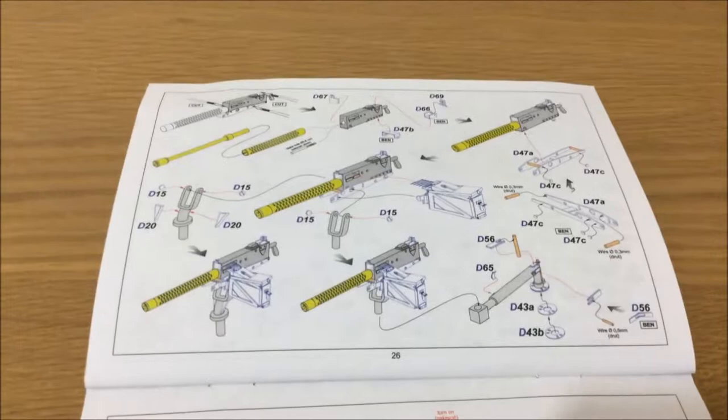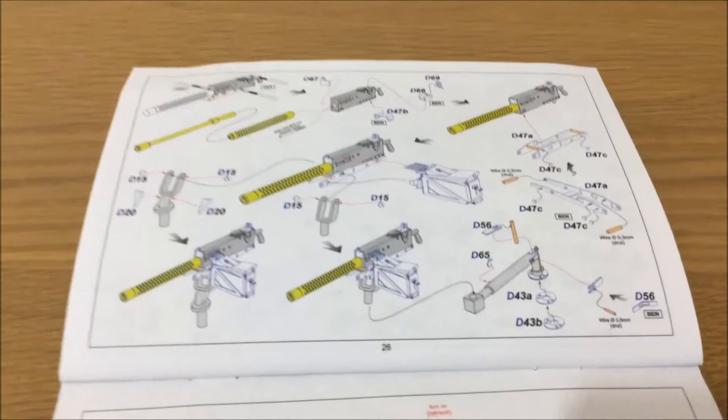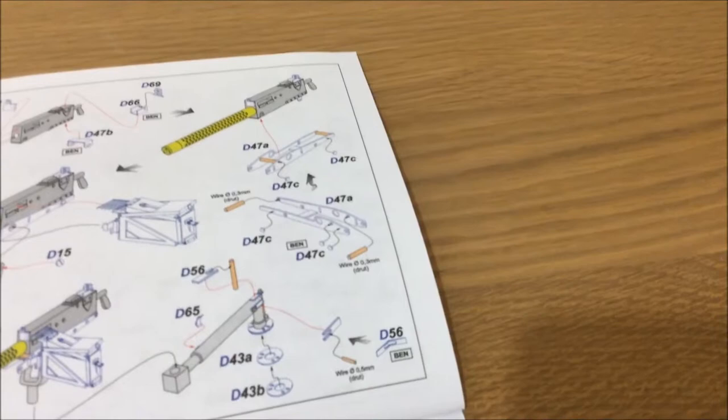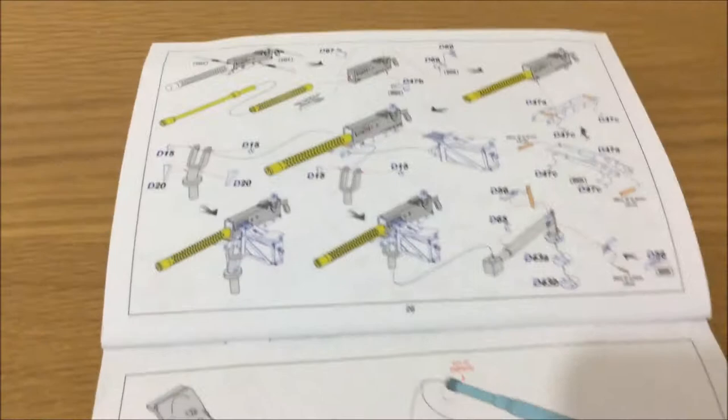Then we come to the 30 cal. On these you get a barrel, very nice metal barrel, and you get the 30 cal cradle.